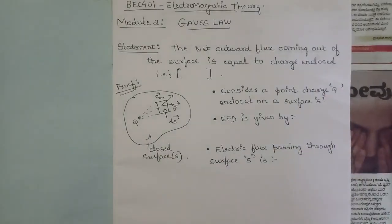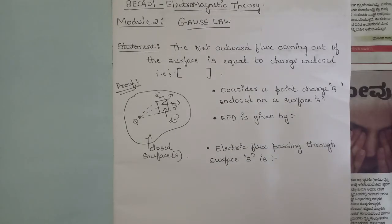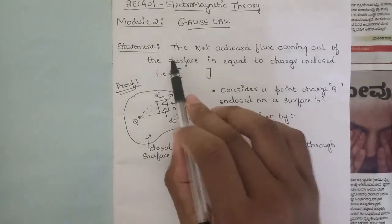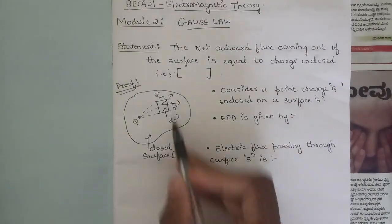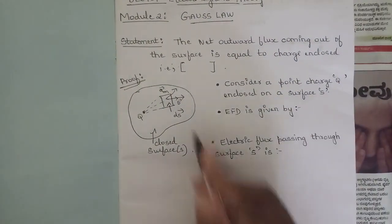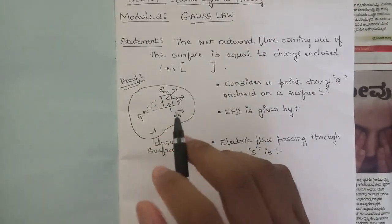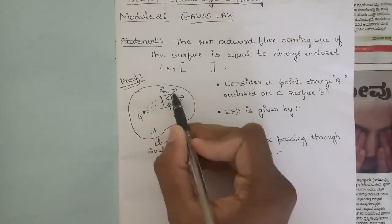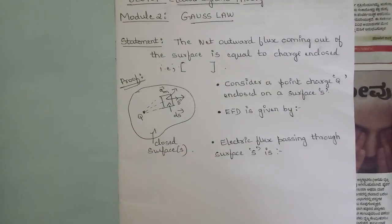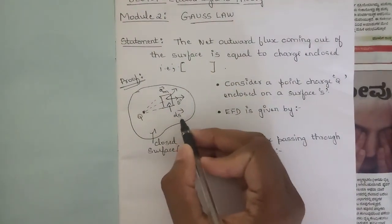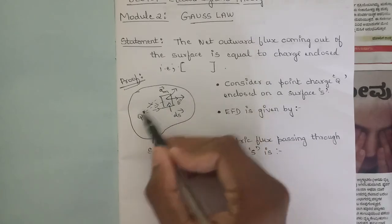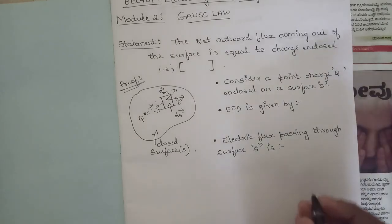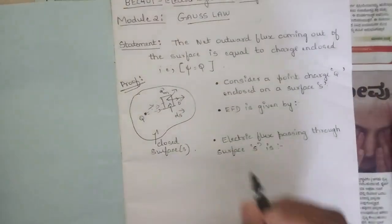We are going to derive the relation between electric flux and charge. Gauss's law states that the net outward flux coming out of the surface is equal to the charge enclosed. In the diagram, this is the closed Gaussian surface with a randomly placed charge Q. The output flux is coming out, named as D, the flux density, with the surface vector ds and unit vector ar.